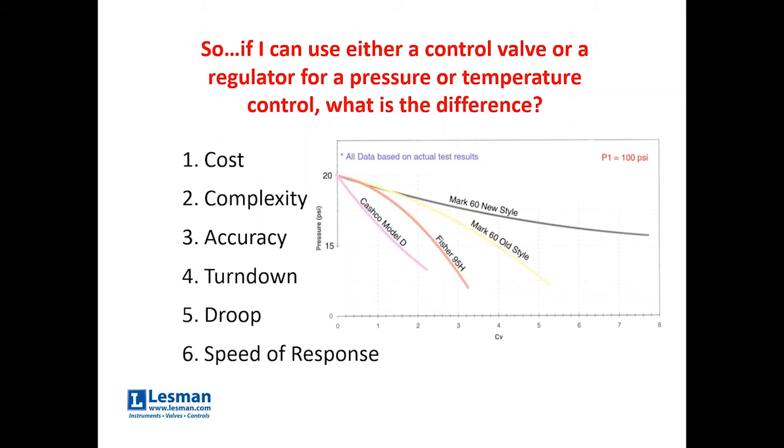Cost, obviously, a control valve is more money because there are more components involved. You have to have a PID loop, you have to have a remote instrument sensing the process variable, there's wiring involved, so a control valve is more costly. Complexity, obviously, the control valve loop is more complex.